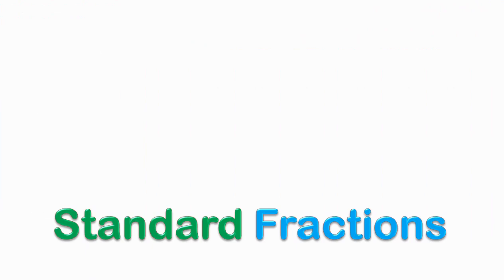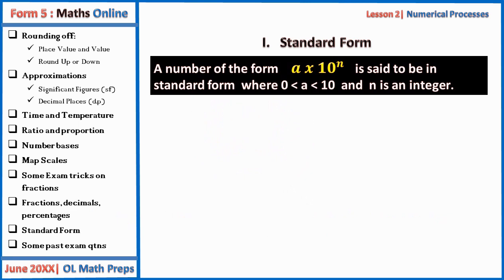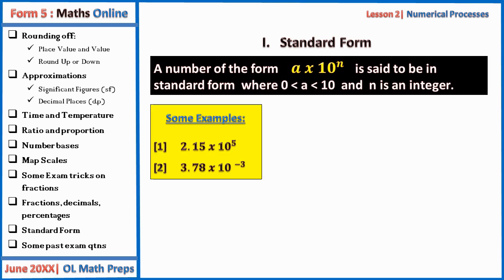Now let's review some basics on standard form. A number of the form A × 10ⁿ is in standard form, where A is greater than or equal to 1 and less than 10, and n is an integer. Examples in standard form: 2.15 × 10⁵ and 3.78 × 10⁻³. However, 35.93 × 10⁶ is NOT in standard form, as the decimal point must be after the first non-zero digit.